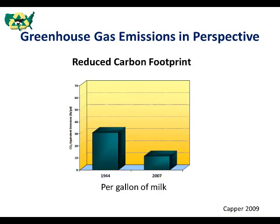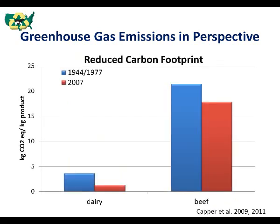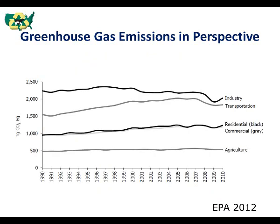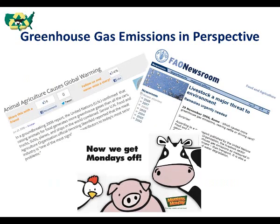We saw that in the U.S. animal agriculture has dramatically increased its production efficiency as it continues to produce more product with fewer resources. We should also recognize that the overall carbon footprint of agriculture is relatively small compared to other sectors of the economy such as transportation. While this is true, animal agriculture is often called upon to defend its impact on the environment and therefore must continually demonstrate its commitment to stewardship.